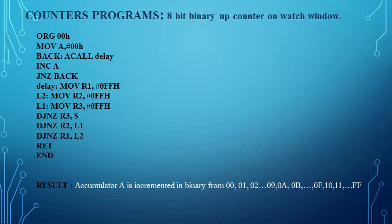We keep incrementing the value of A until it becomes zero. After FFh, adding one gives 00h. So this gives a count from 00h to FFh. We keep repeating this loop until the value becomes 00h, completing the count from 00h to FFh.